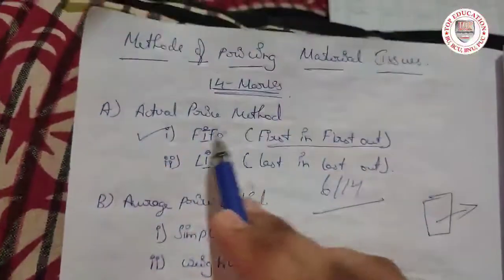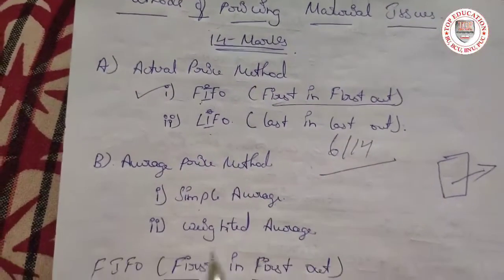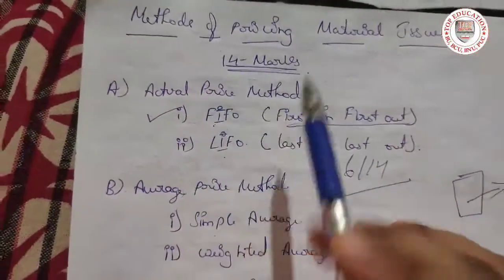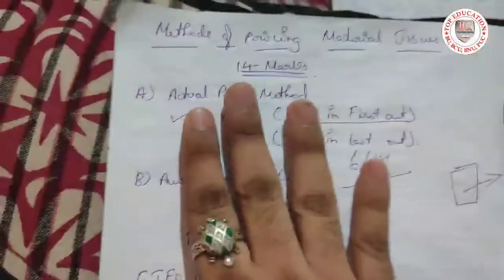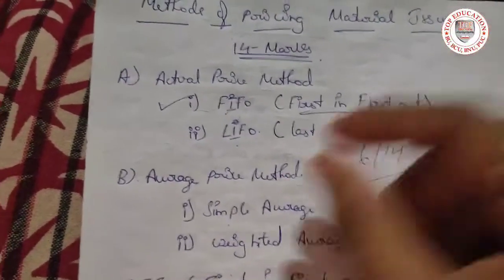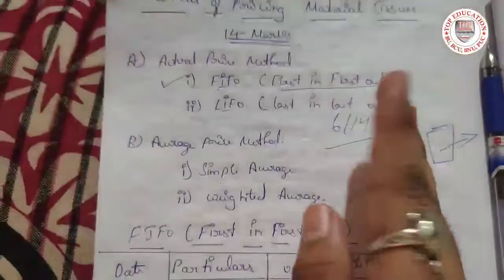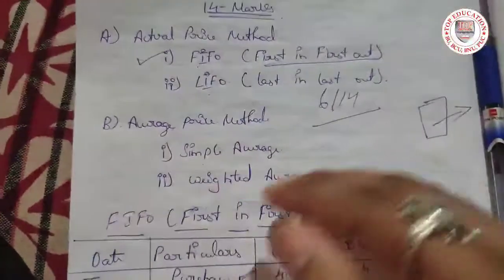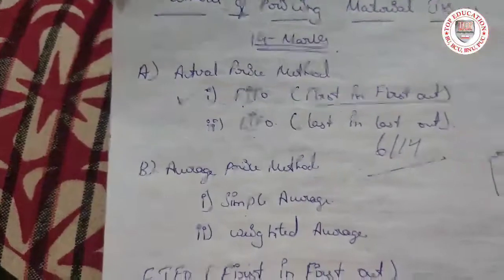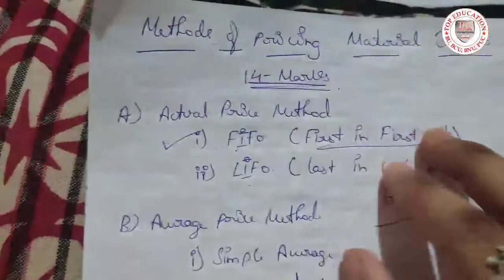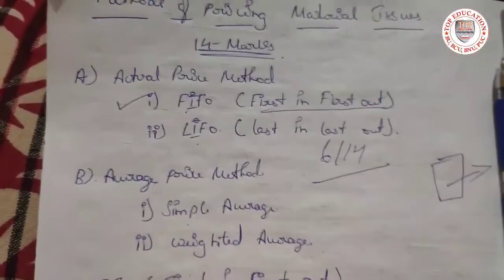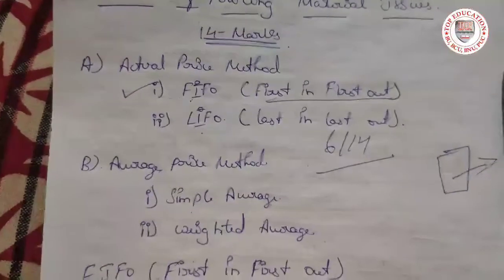We have four methods: FIFO, LIFO, Simple Average Method, and Weighted Average Method. These are divided into two parts. First is the actual price method, where we take the same actual price. Second is the average price method, where we take two prices, divide by two, and get the average.